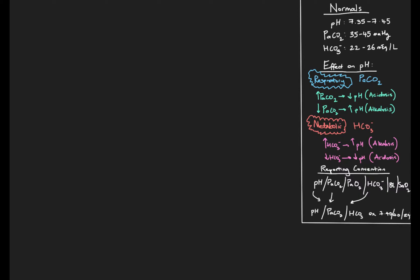An example would be written as 7.40 / 40 / 24. What we're going to do with each example is write out the blood gas, say whether each value is normal or abnormal, and then create an interpretation. For example number one, our pH is 7.38, pCO2 is 38, and bicarb is 23. It'd be useful for you to pause the video here, try the interpretation yourself, then press play to check.